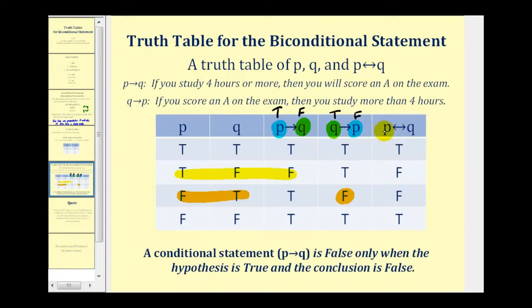And so now to complete the column for the biconditional statement, P if and only if Q, we need to find where both the third and fourth column are true. And notice that occurs here, and it also occurs here. The other two rows we have false true and true false. And again, they both have to be true in order for the biconditional statement to be true.